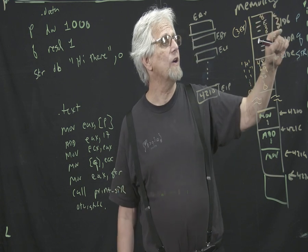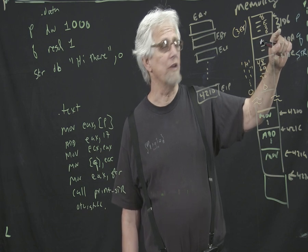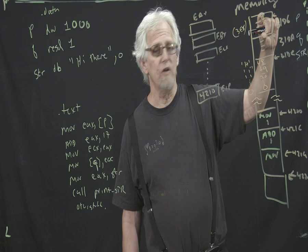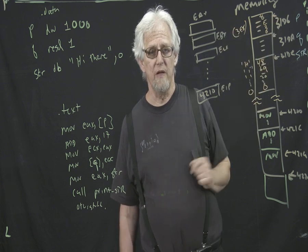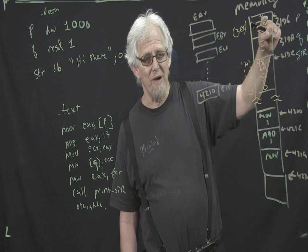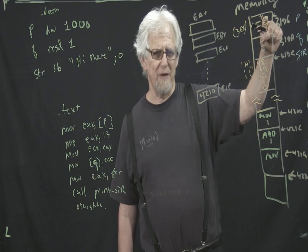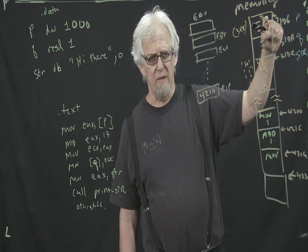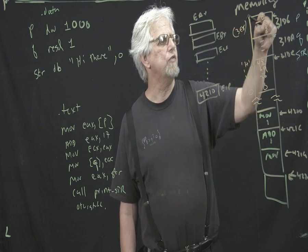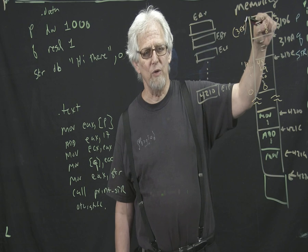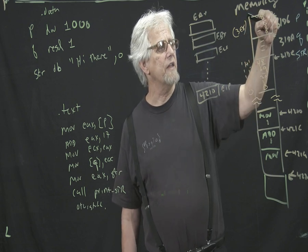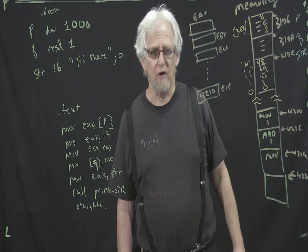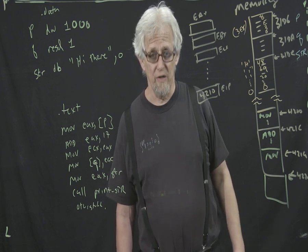These four bytes of memory are starting at address 31D6. So this is the address of that little bit of memory, and the address is really pointing at the first byte. The first byte happens to be the low-order byte of the number. This is the address of a spot in memory, and the next four bytes in memory from that spot are going to contain the number 1000.